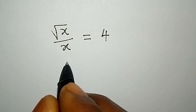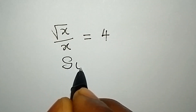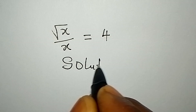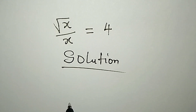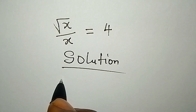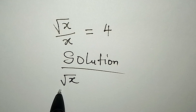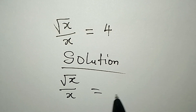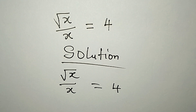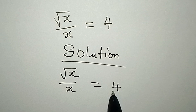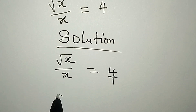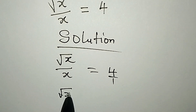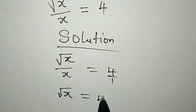Hello everyone, let's provide the solution to this problem: square root of x over x equals 4. This is still over 1, so we can simply cross multiply, so that square root of x will be equal to 4.